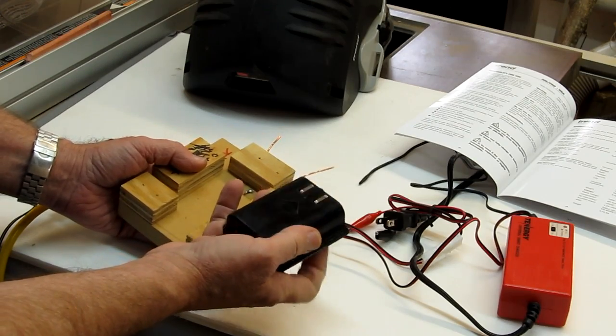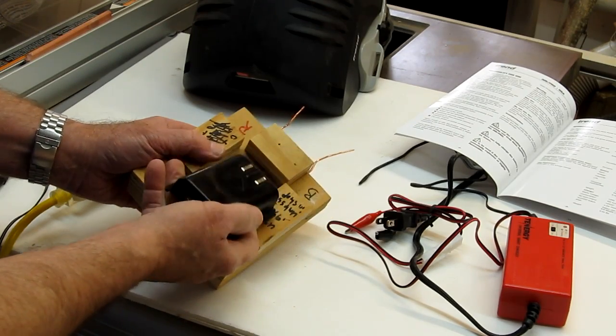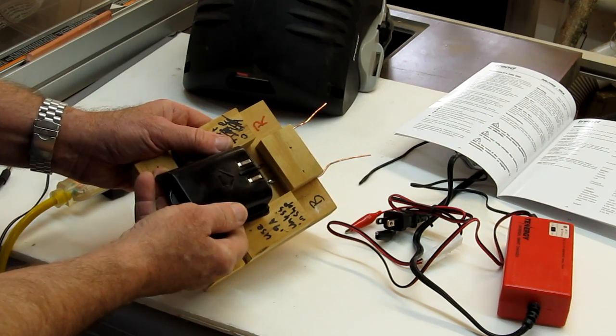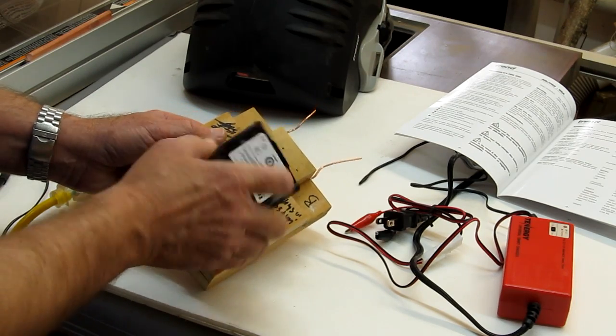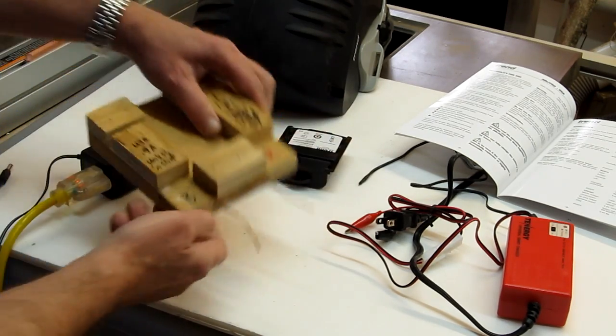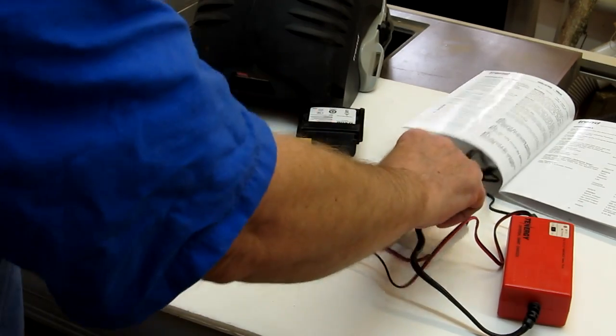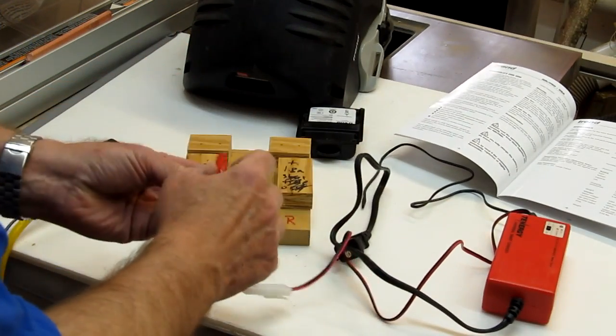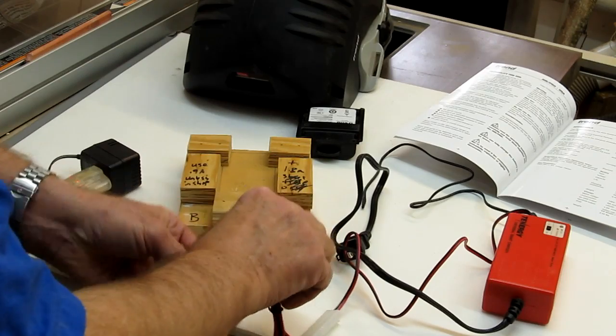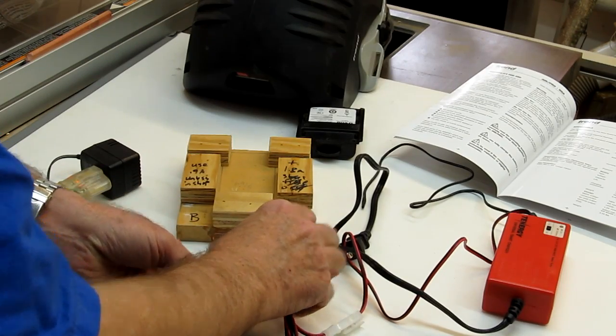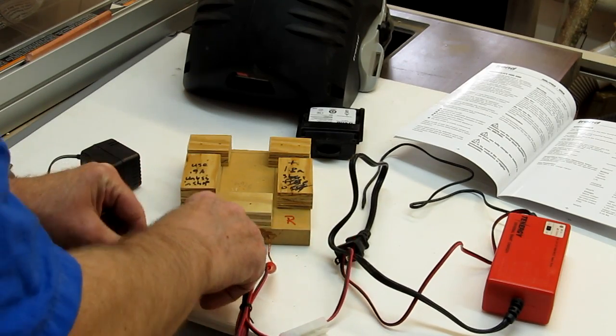And you just figure out exactly where those things have to be to match this before you drill your holes and you can tell if it works. Here's how it connects up. You simply, the red lead is on the right, that's the positive lead. Black lead is on the left.